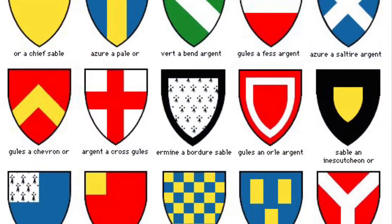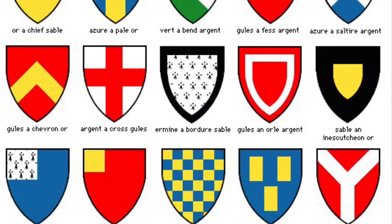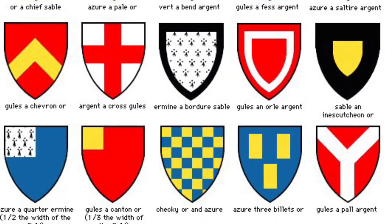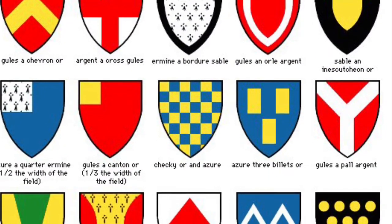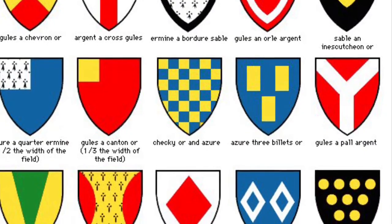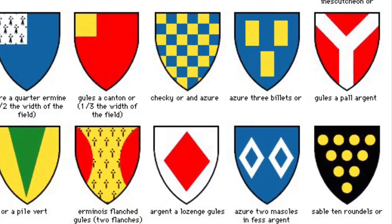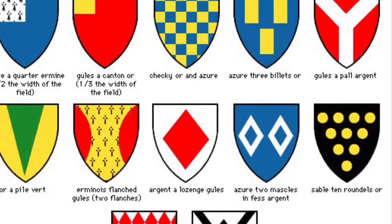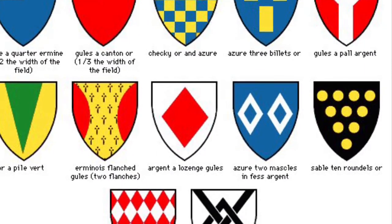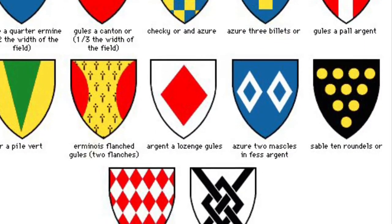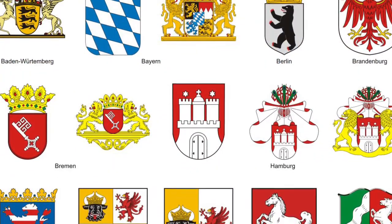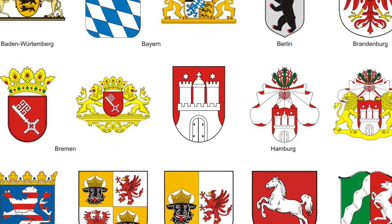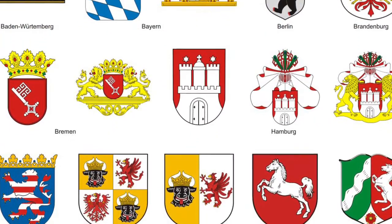In the coat of arms, colors, animals, symbols, and shapes all represent something special for the family — such as what's important for that family, their religion, who the members of the family are, and the jobs and roles they had.